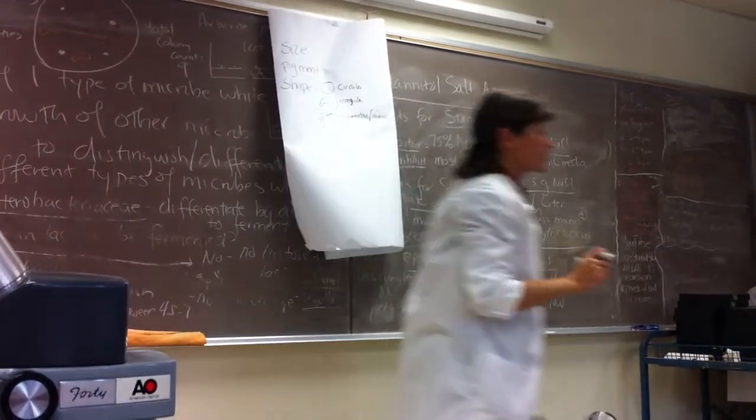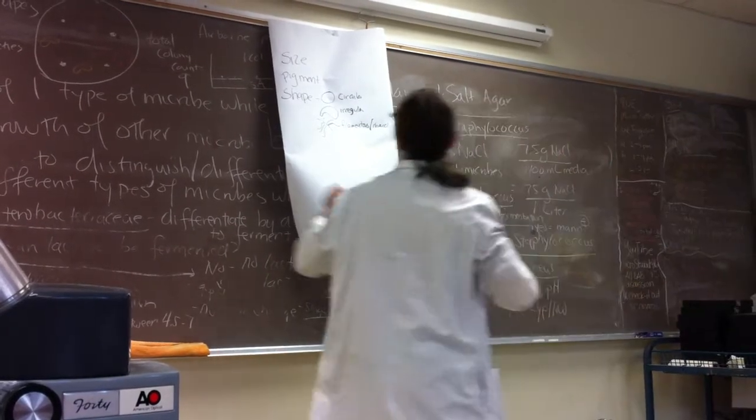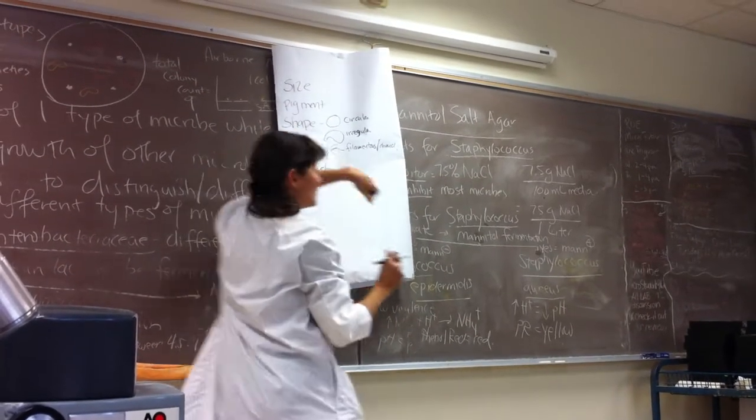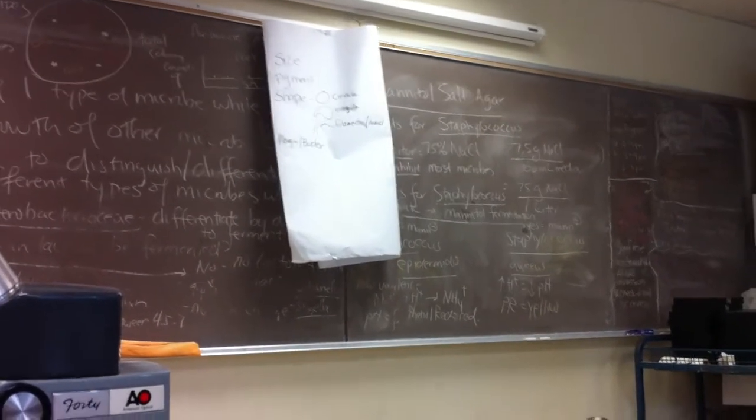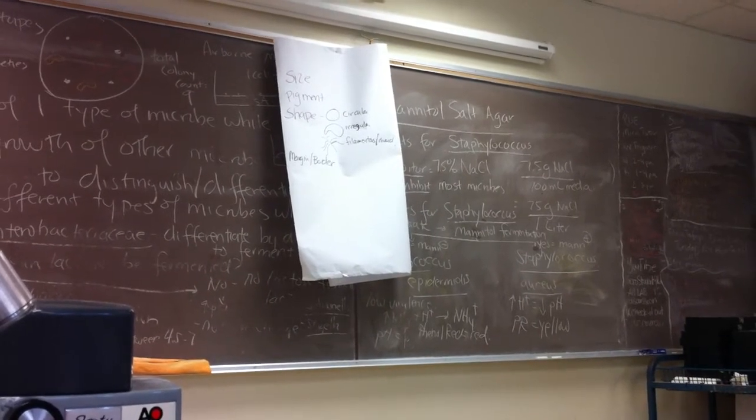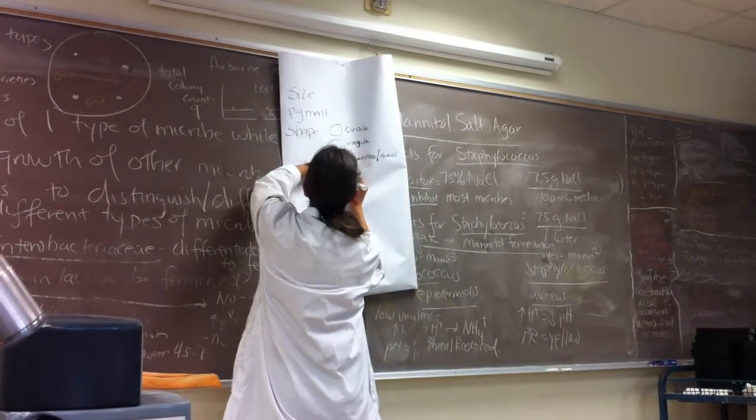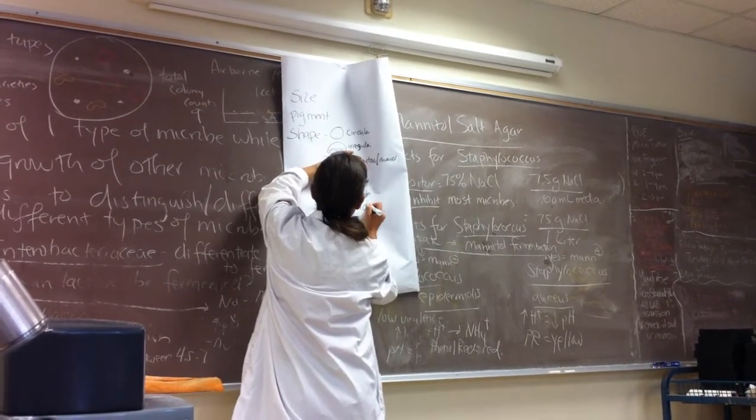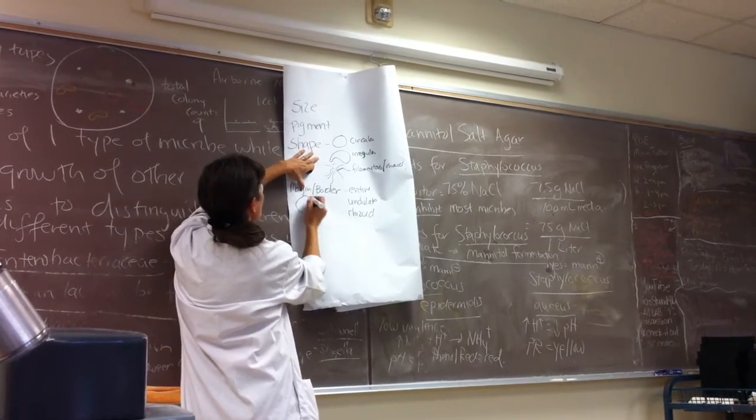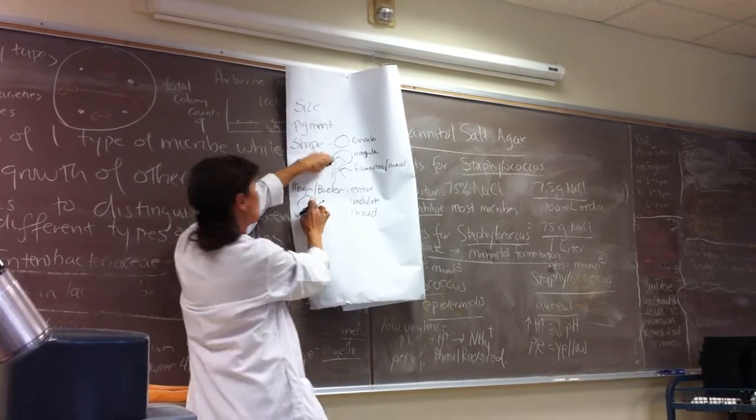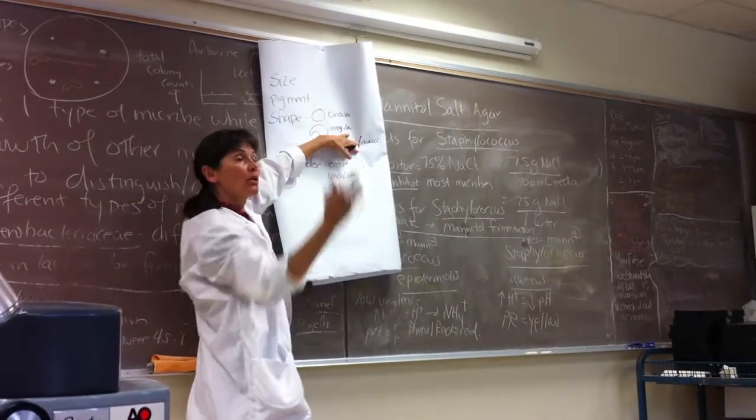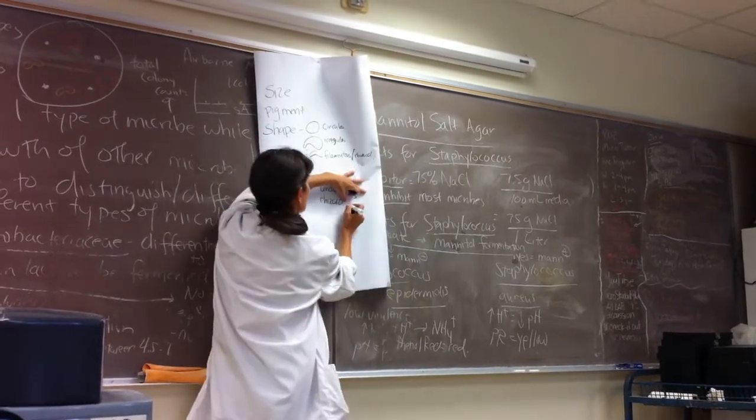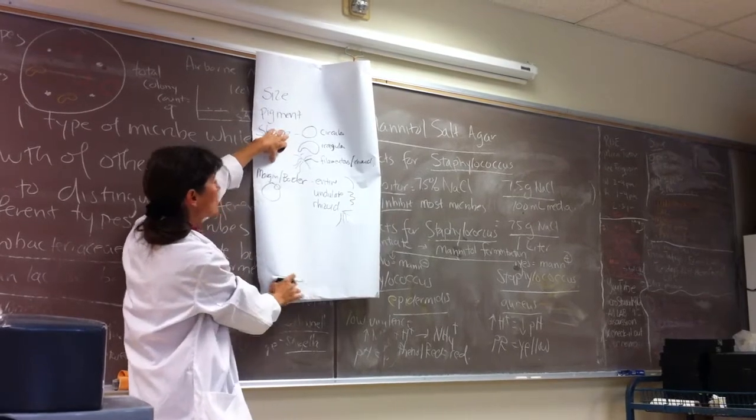Now the next property that we're going to take a look at is the margin or the border of the colony. And the terms we have there are entire, undulate, or rhizoid. We're going to simplify to entire, undulate, or rhizoid. And again, what we're doing is we're focusing in, if this is our colony, we're focusing in on the border right there. So entire is nice and smooth. It's a nice smooth border all the way around. Undulate is like waves, so wavy like that. And rhizoid is like little branches coming off. So that's the three types of borders.